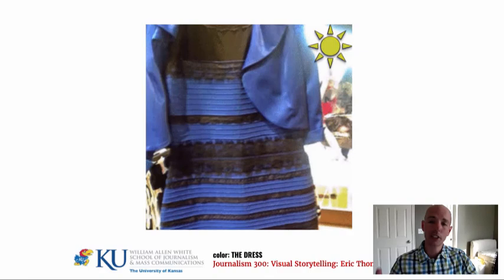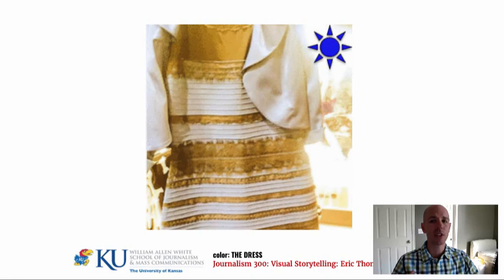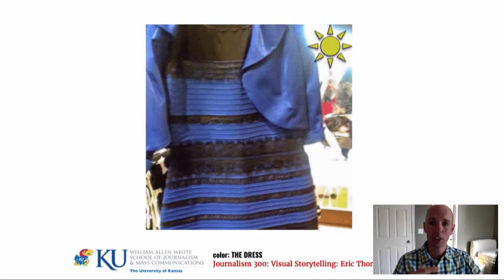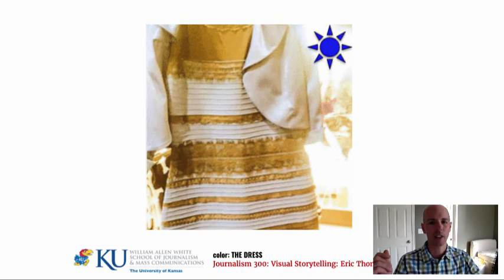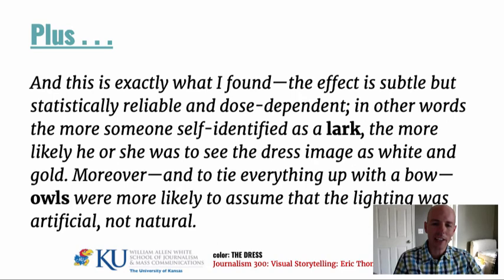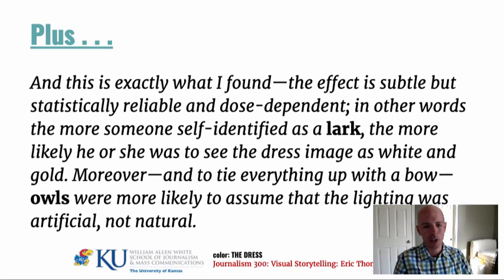Some researchers think this might explain why some people saw the dress one way a few years ago and now see it differently — because their sleep patterns have changed. Maybe you were an early riser in high school but now sleep in as a college student. The researcher's conclusion: 'The effect is subtle but statistically reliable and dose-dependent — the more someone self-identified as a lark, the more likely he or she was to see the dress image as white or gold.' Moreover, owls were more likely to assume the lighting was artificial and not natural.